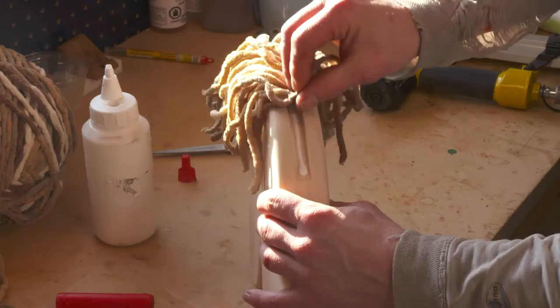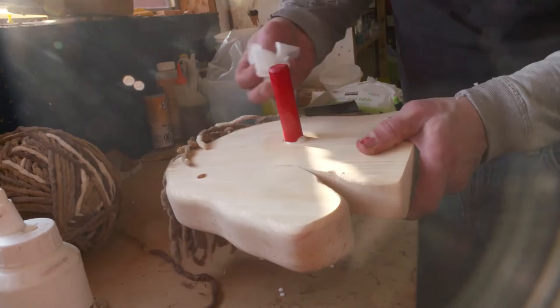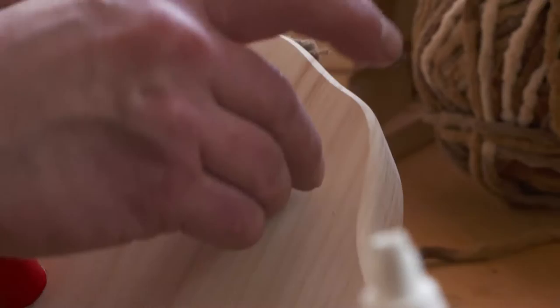Glue is applied to the rocking horse head and the mane is added and secured with a few staples. A finishing strip of yarn is glued in place. Glue is then added and the handles are installed, followed by gluing in the eyes.